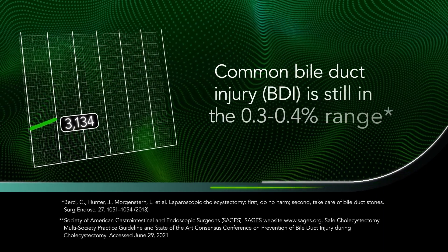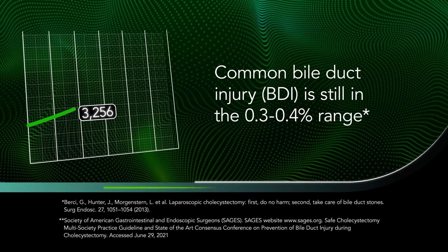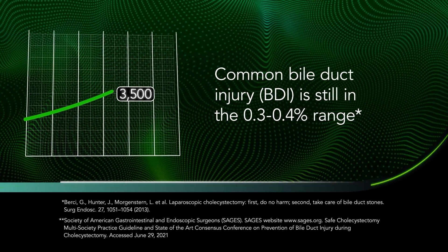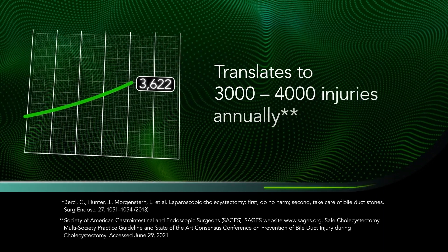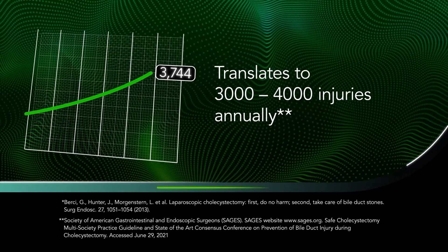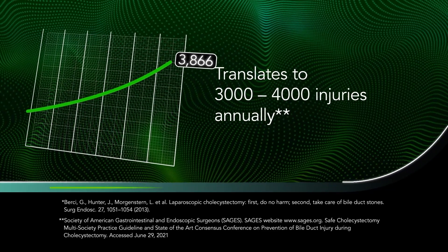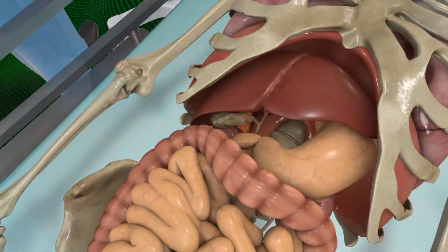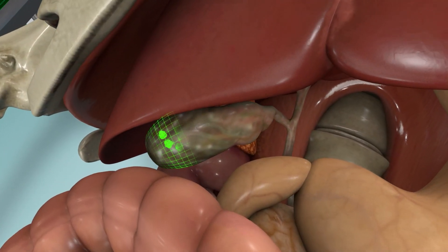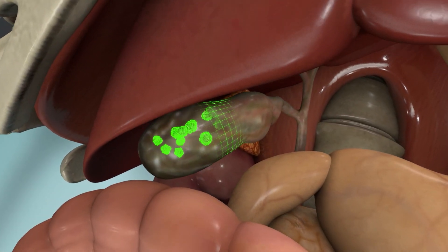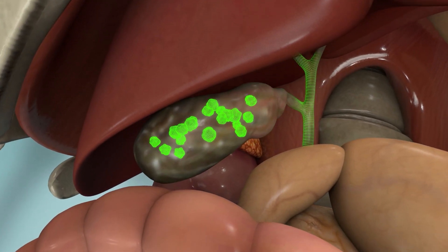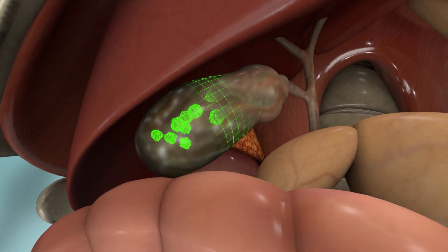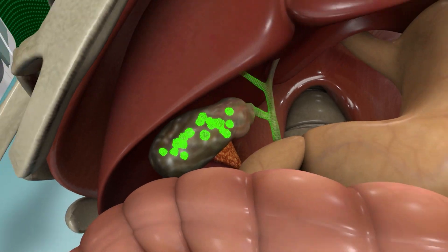Due in part to visualization problems during surgery, between 3 and 4 thousand bile duct injuries occur annually. During laparoscopic cholecystectomy, surgeons can use intraoperative ultrasound to get information about bile duct stones and surrounding anatomy.